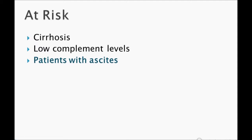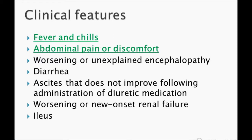Clinical features: patients with ascites present with fever, chills, and abdominal pain or discomfort. Remember — fever, chills, and abdominal pain: first think of SBP. Other features include worsening or unexplained encephalopathy, diarrhea, ascites that does not improve following diuretic medications, and worsening or new-onset renal failure. However, the most important are fever, chills, and abdominal pain.